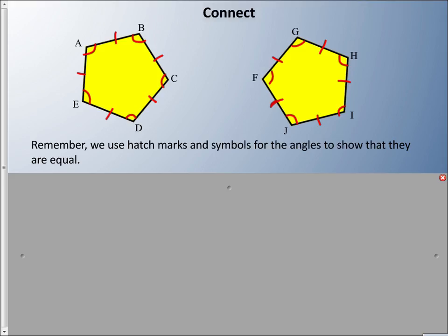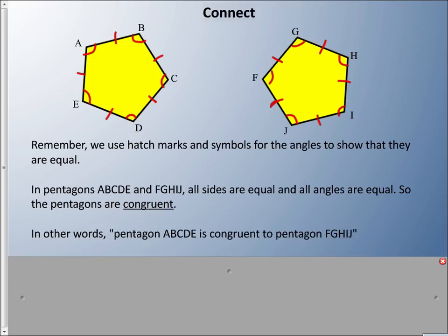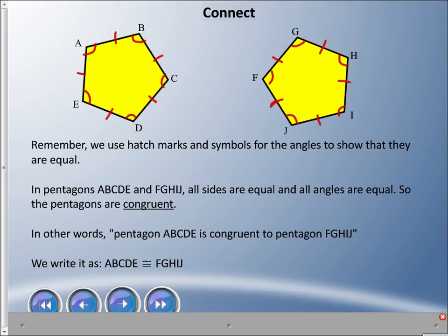So in pentagons ABCDE and FGHIJ, all the sides are equal and all the angles are equal, so these pentagons are congruent. And in other words, we would say pentagon ABCDE is congruent to pentagon FGHIJ, and we have this funny symbol.